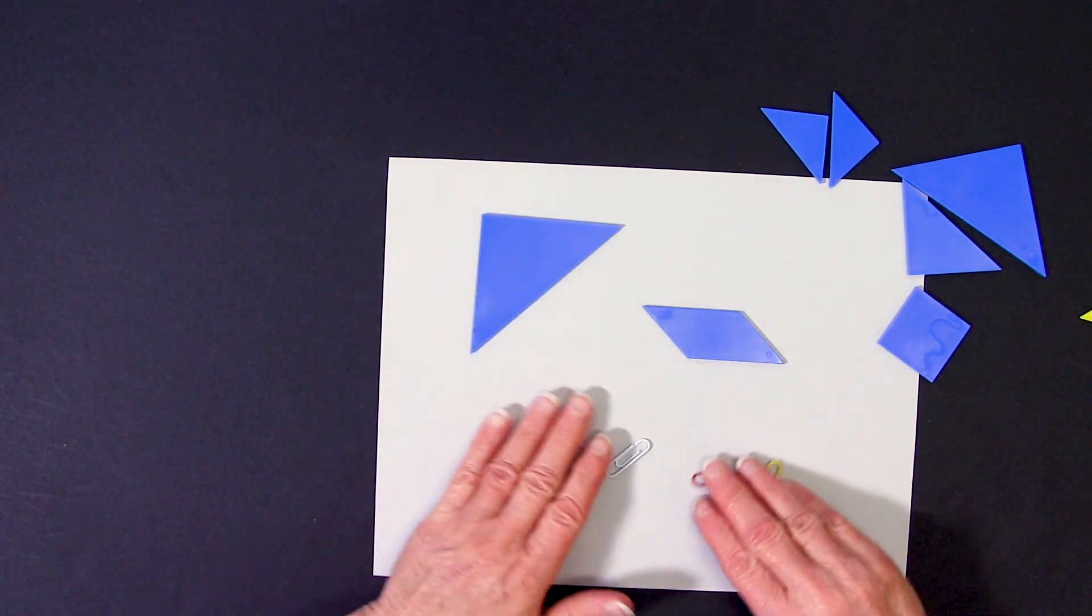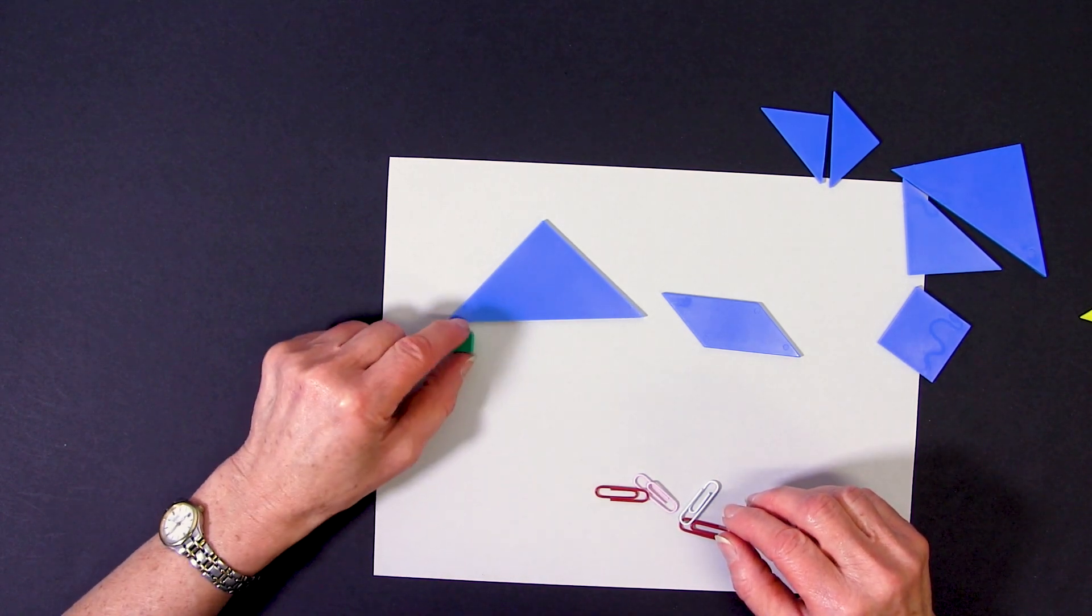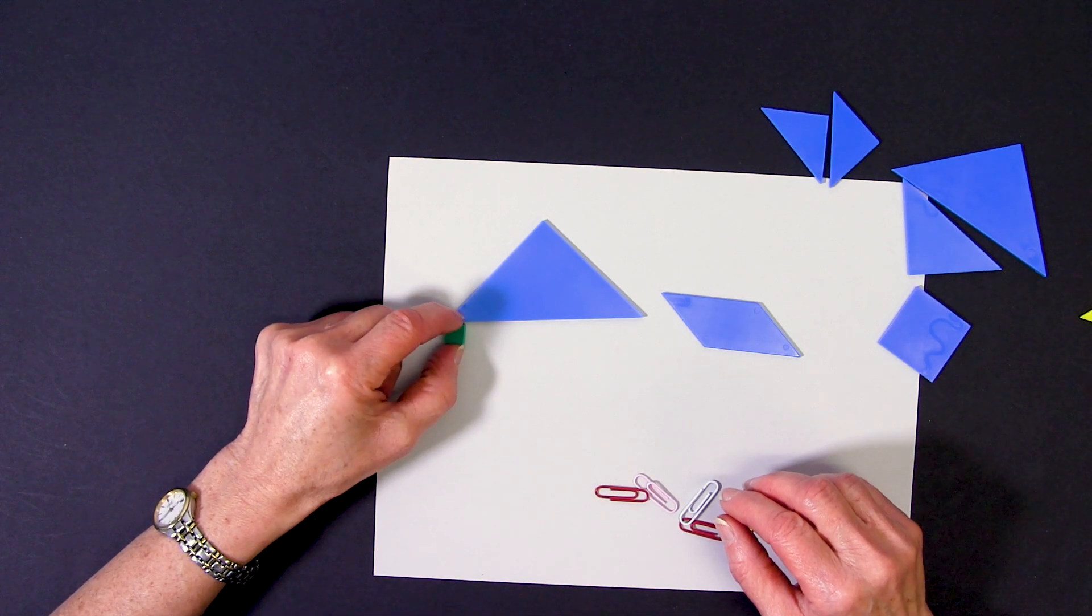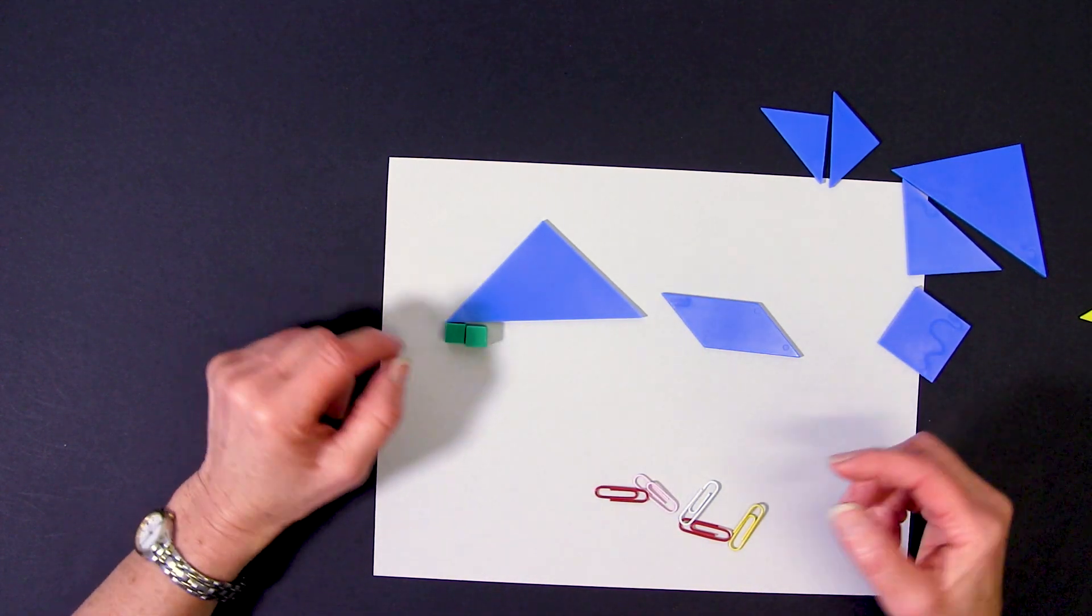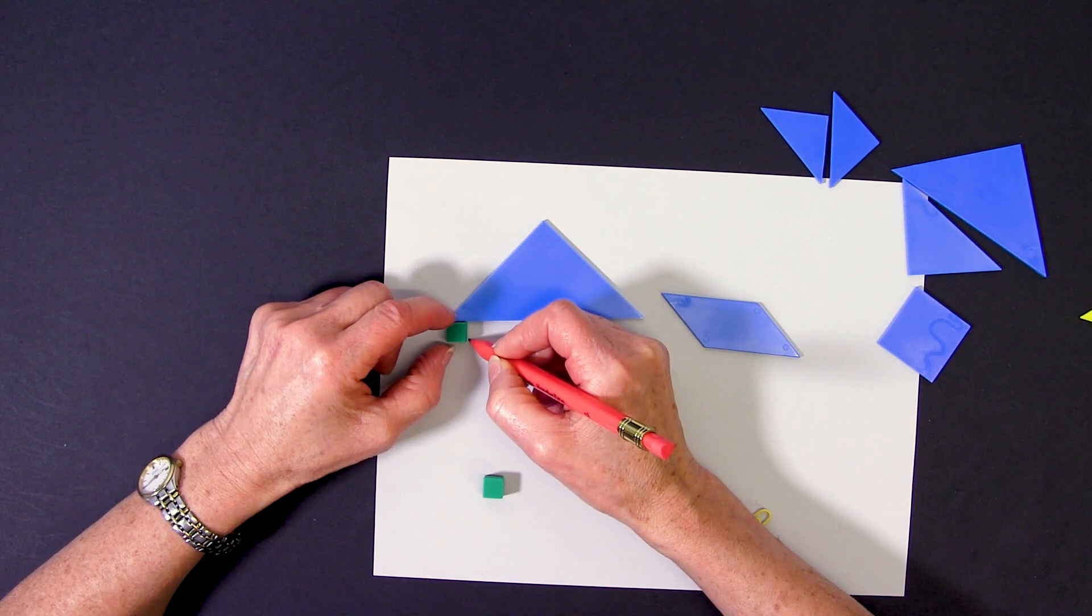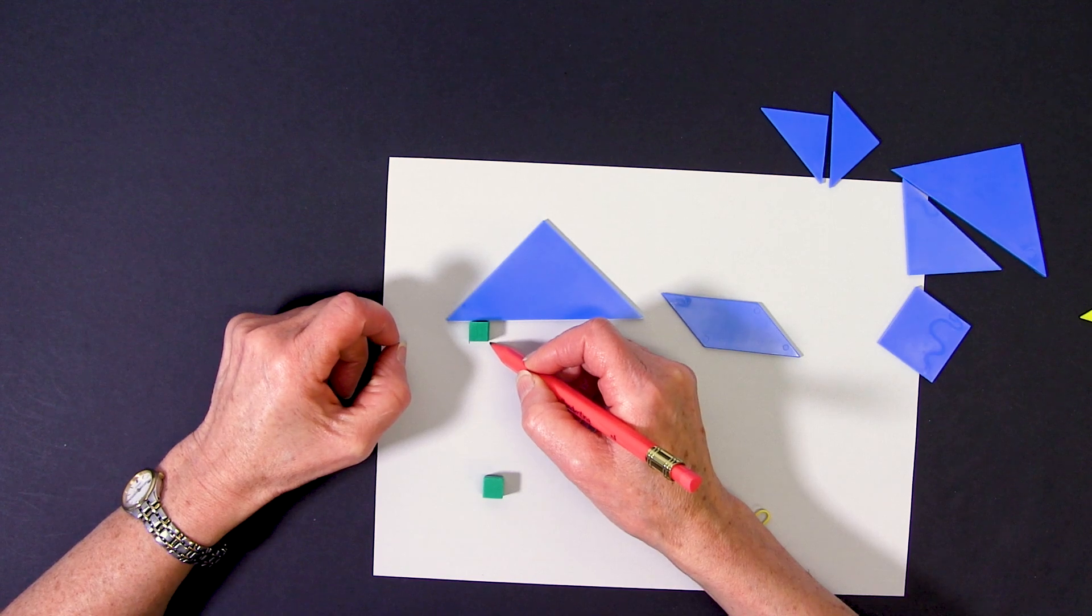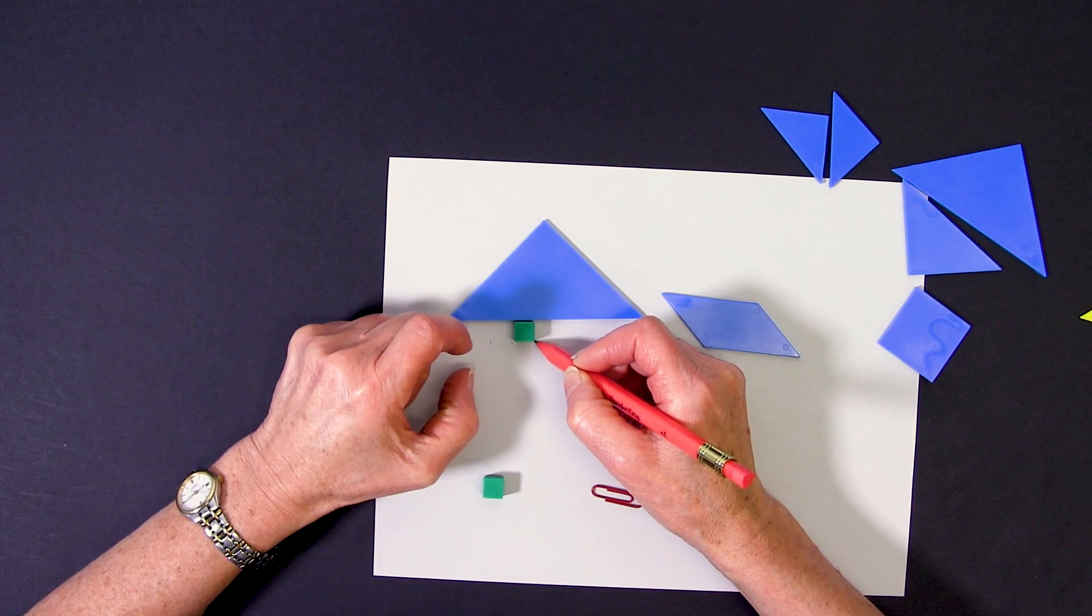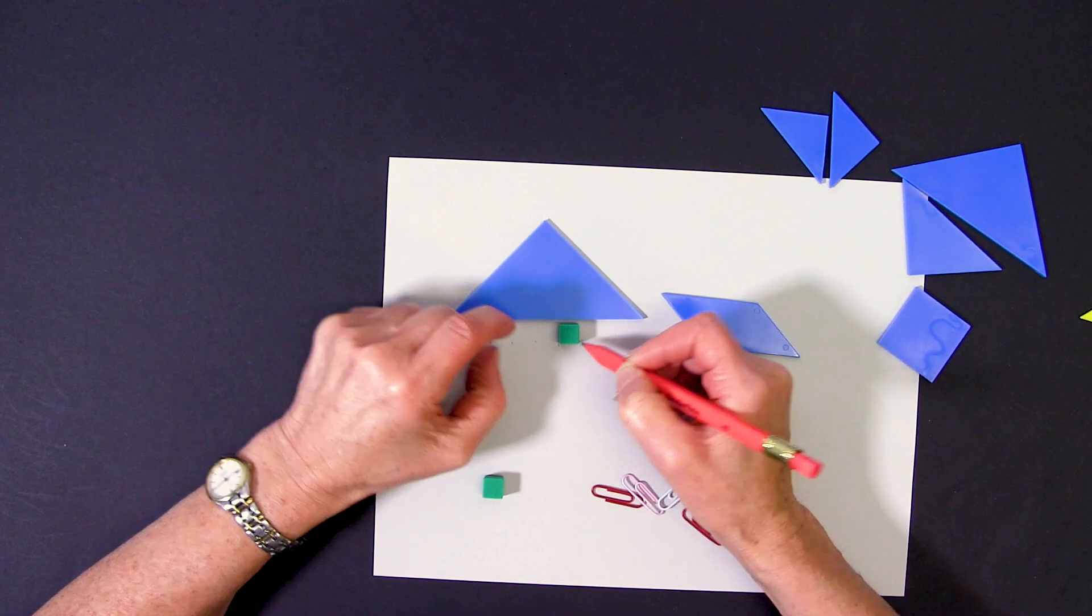One other way in which we can do it is to use a centimeter length. And in this case we can start at the end. Now we could line up a whole bunch of the centimeter lengths or we could just use one and we could measure by iterating. So what I'm doing is just making a little mark so that I can see where to move it to. And then I would count how many spaces.